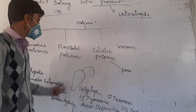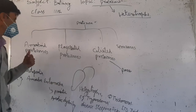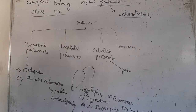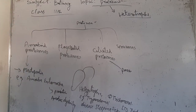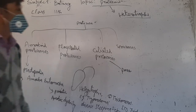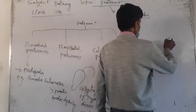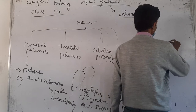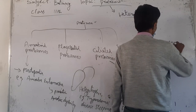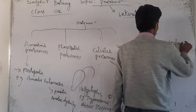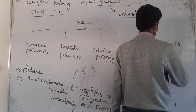The first category is amoeboid protozoans. They have pseudopodia — what is pseudopodia? Pseudopodia.